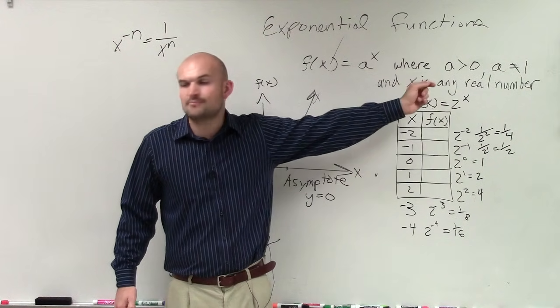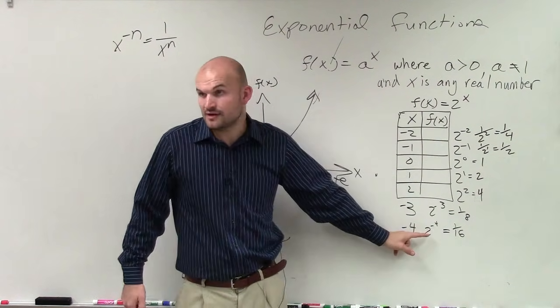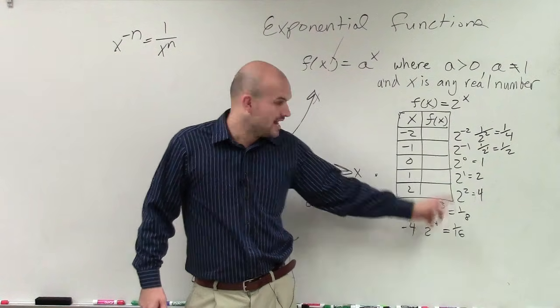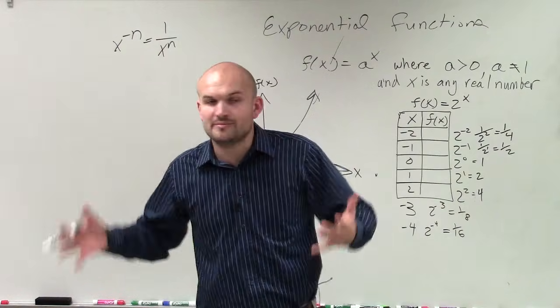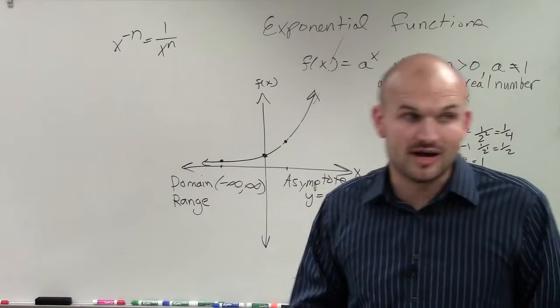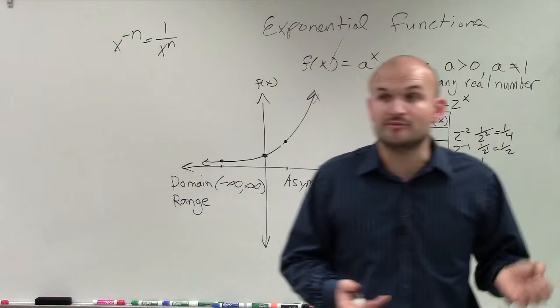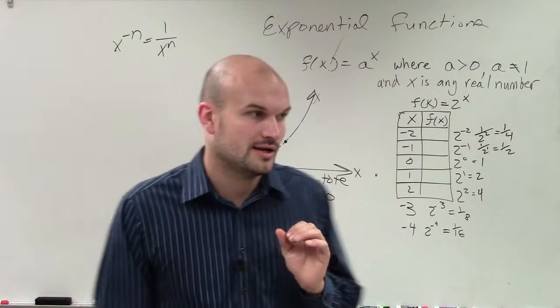So our range, is it possible for me to put a number in for x and to get a negative number? Can I put 2 raised to some power and get a negative number? No, because when I put negative numbers in for there, it just makes it a fraction. And when I put positive numbers, it just makes it a larger number. So it's impossible for me to put in a value for x and to get a negative number.